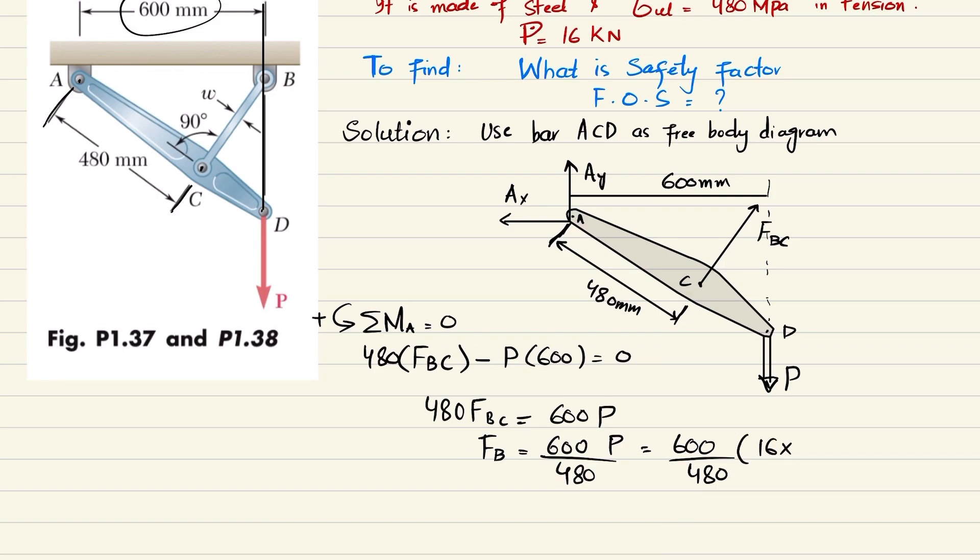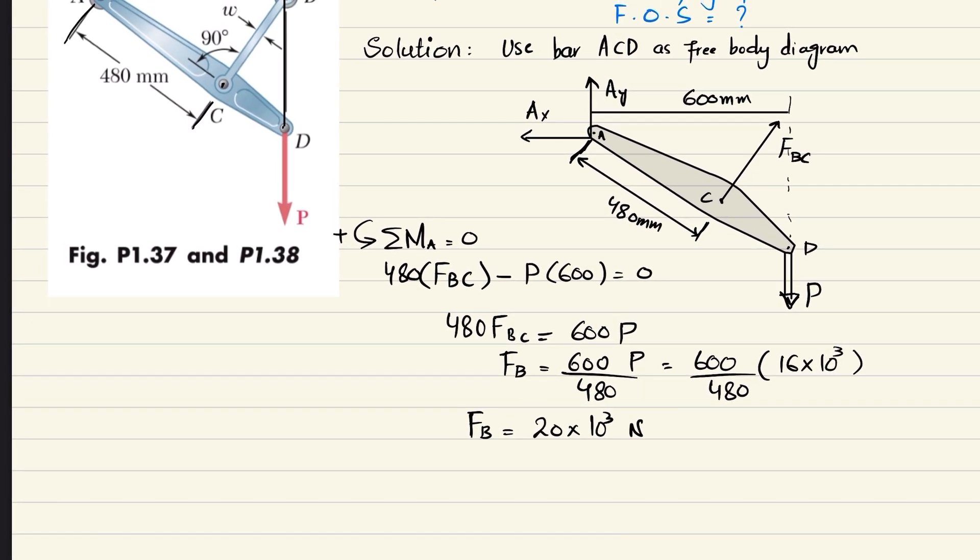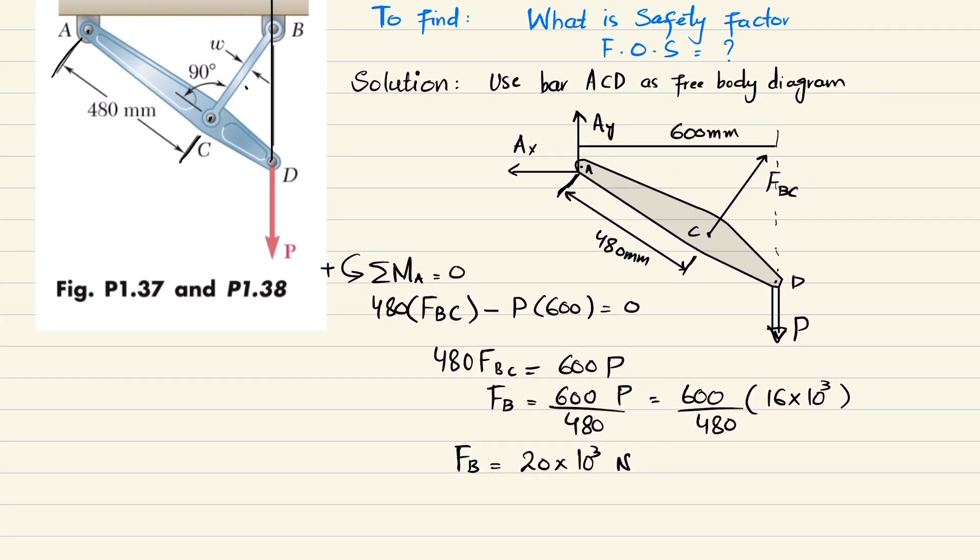FBC equals 600 divided by 480 multiplied by P, which is 16 kilonewton, so 16 times 10 to the power 3. When you calculate it, you get FBC equals 20 times 10 to the power 3 newton.